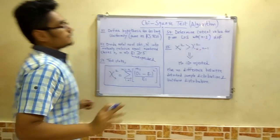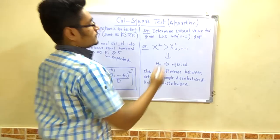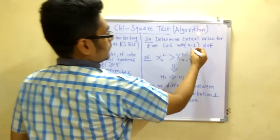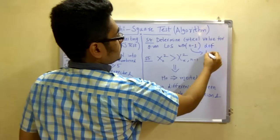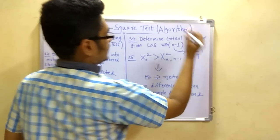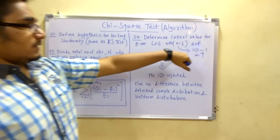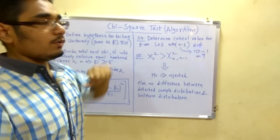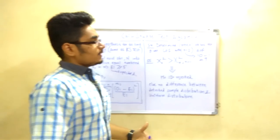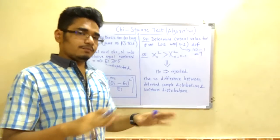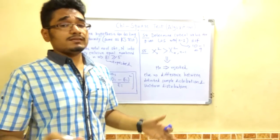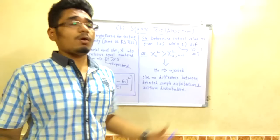Step 4 is to determine the critical value of the given level of significance with n minus 1 degrees of freedom. For example, if you take n as 10, you have to compute 10 minus 1, that is 9 degrees of freedom. The level of significance will be taken from the statistical table of chi-square distribution. In the question they may give you the value, or you will have to remember some values, but it's not necessary that you have to remember all the values.